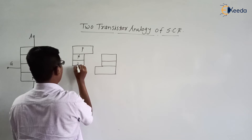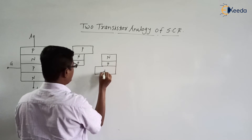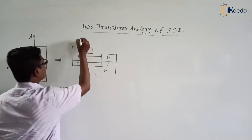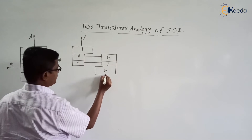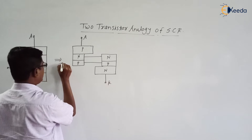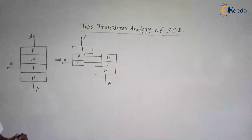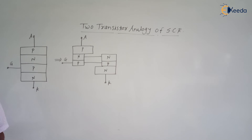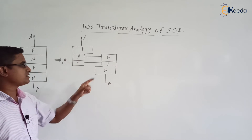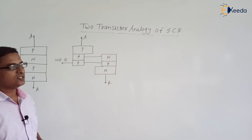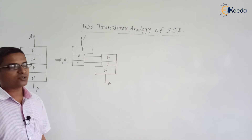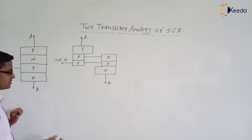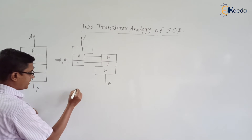Suppose this is the PNPN structure. This is the anode of the SCR, this is the cathode of the SCR, and this is the gate terminal of the SCR. If we join these two sections, we will get the PNPN structure. So here it is like we are having the PNP transistor and the NPN transistor. We can draw the equivalent circuit.